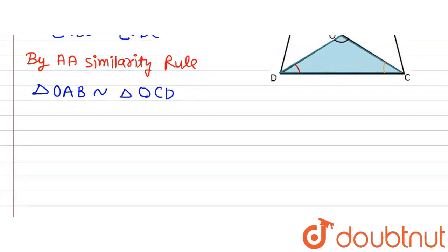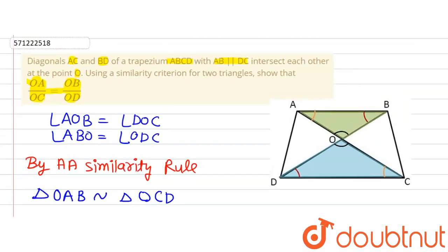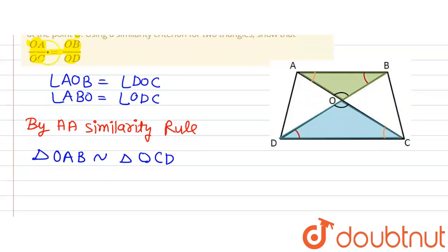Now we know that the ratio of corresponding sides of similar triangles is equal. We are supposed to prove that OA divided by OC equals OB divided by OD. Since triangle OAB is similar to triangle OCD, OA divided by OC will equal OB divided by OD, because these are corresponding sides of the similar triangles.